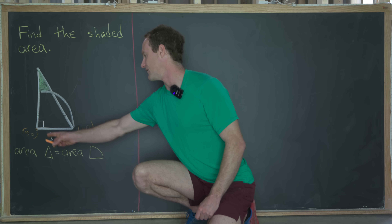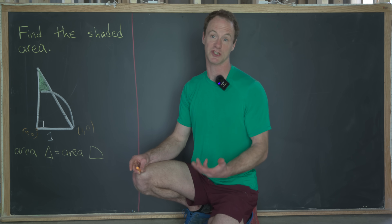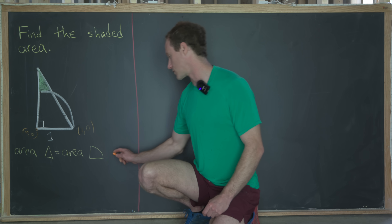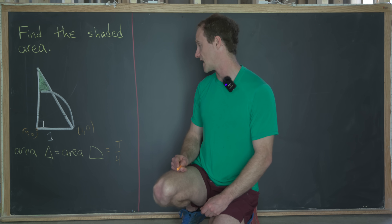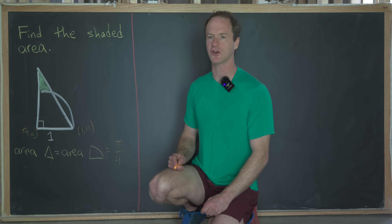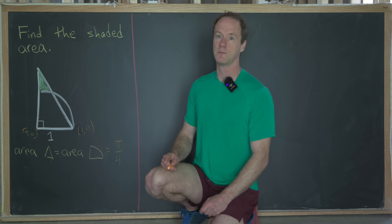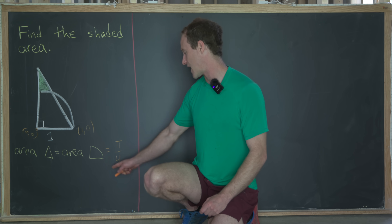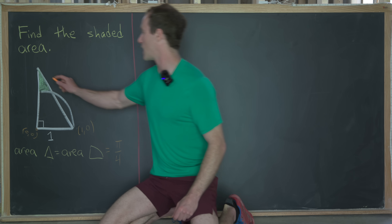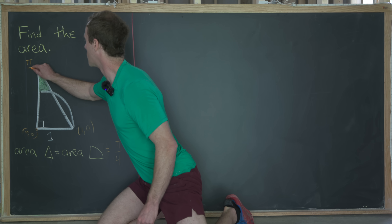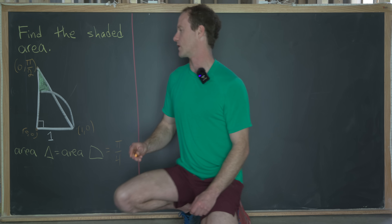The area of an entire circle with radius one is π times one squared, or just π. A quarter circle therefore has area π/4. The area of a triangle is one-half base times height; with a base of one, the height must satisfy one-half times height equals π/4, giving a height of π/2. So the top vertex is at the coordinate (0, π/2).